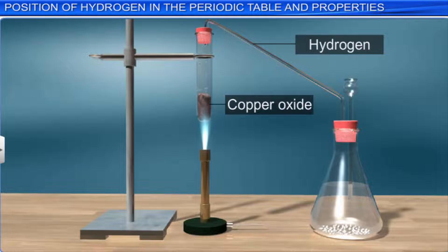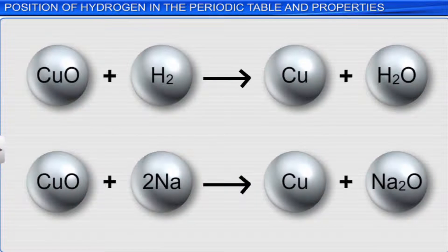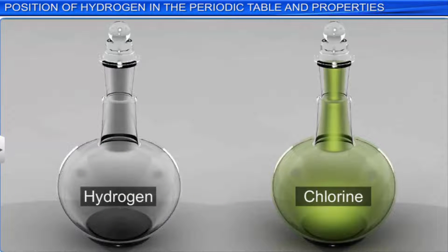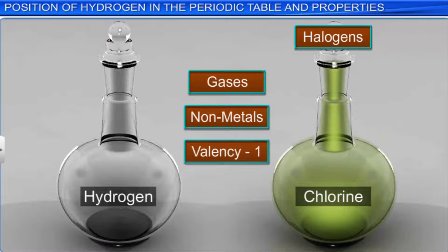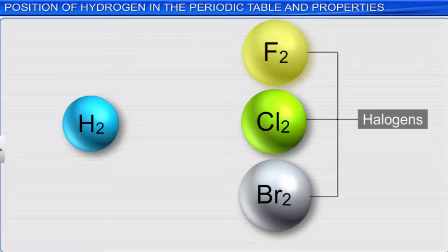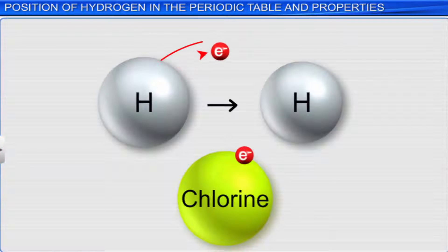Reducing power: Alkali metals and hydrogen act as reducing agents — that is, they remove oxygen from other molecules, forming oxides of their own in the process. Now let's see the similarities between hydrogen and halogens. Hydrogen is a gas, just like the halogens. Halogens and hydrogen are non-metals. Both have a valency of one. Both exist in the form of diatomic molecules — for example, hydrogen and chlorine. Both hydrogen and the halogens show the tendency to form anions. Thus, because of the anomalous behavior of hydrogen, it is difficult to assign any definite position to it in the periodic table.